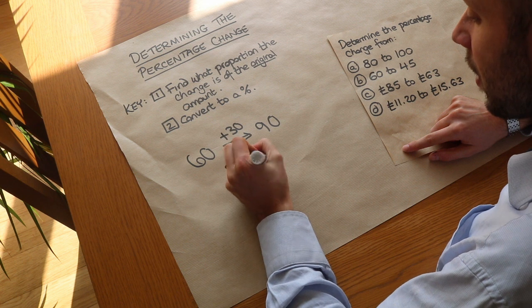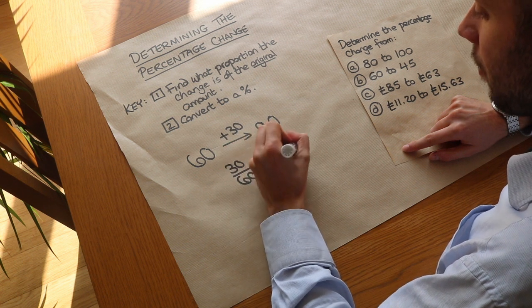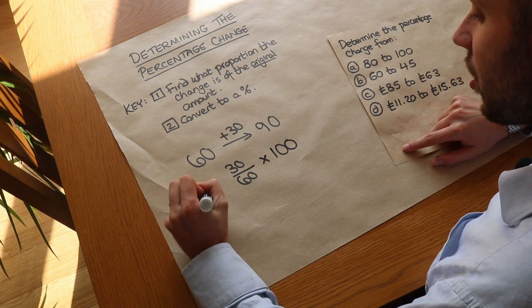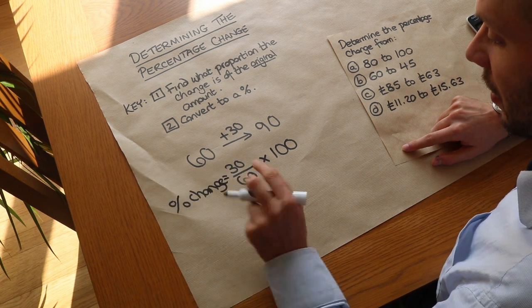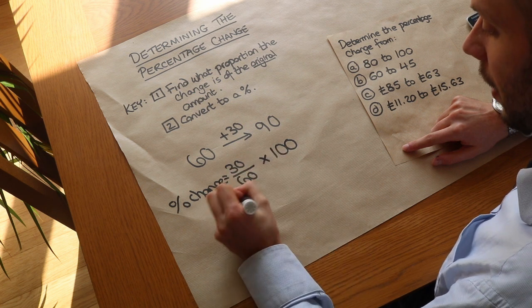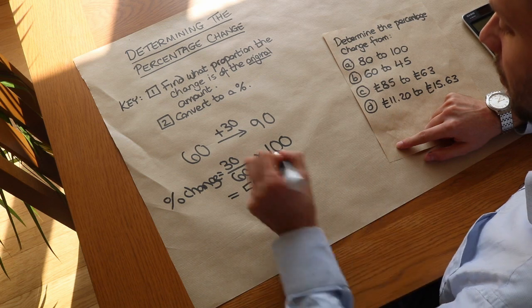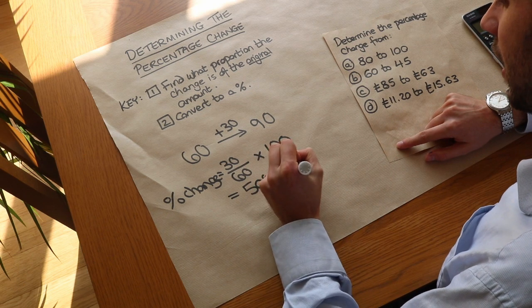Well, we times that by 100. That's how we convert from a fraction to a percentage, and that gives us the percentage change. So 30 over 60 is half, and half times 100 is 50. So it's 50 percent, and I would usually say it's a 50 percent increase.